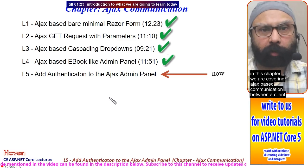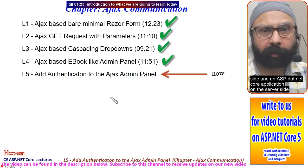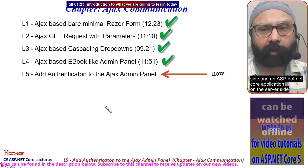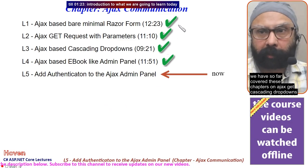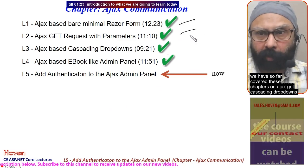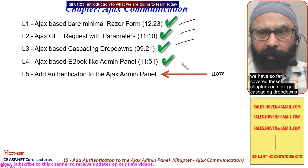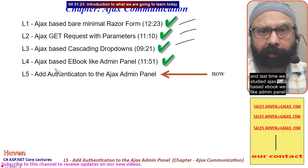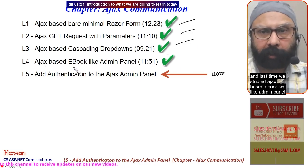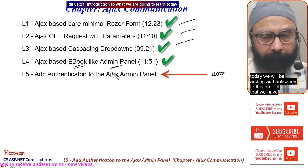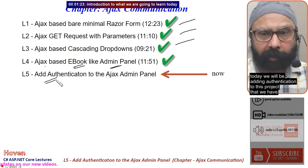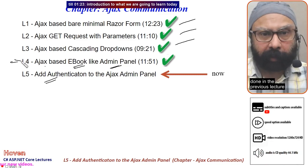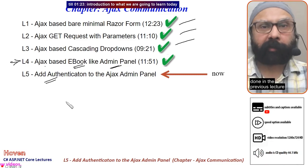We are covering Ajax-based communication between a client side and an ASP.NET Core application on the server side. We have covered chapters on Ajax GET, cascading dropdowns, and last time we studied an Ajax-based e-book-like admin panel. Today we will be adding authentication to the project that we built in the previous lecture.